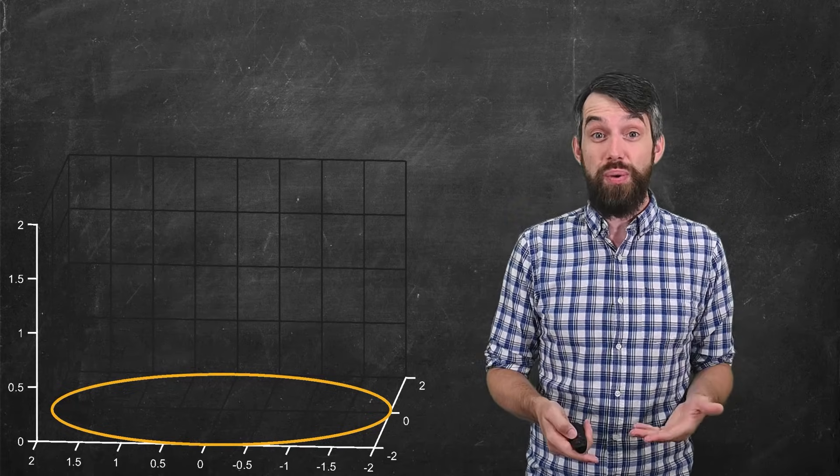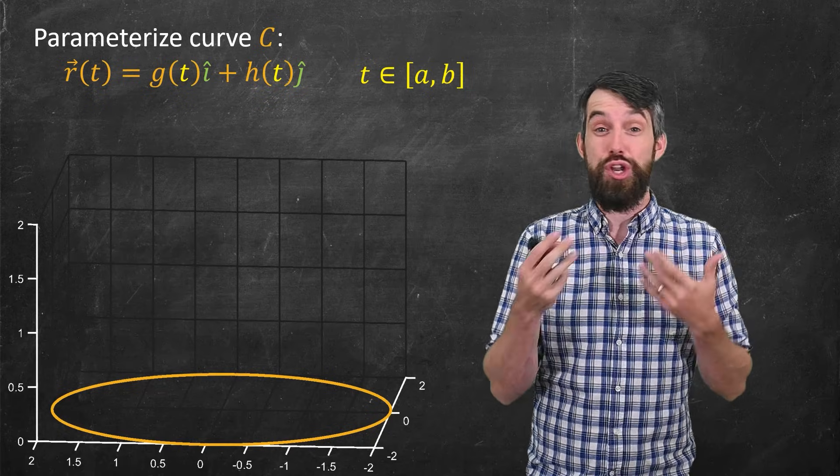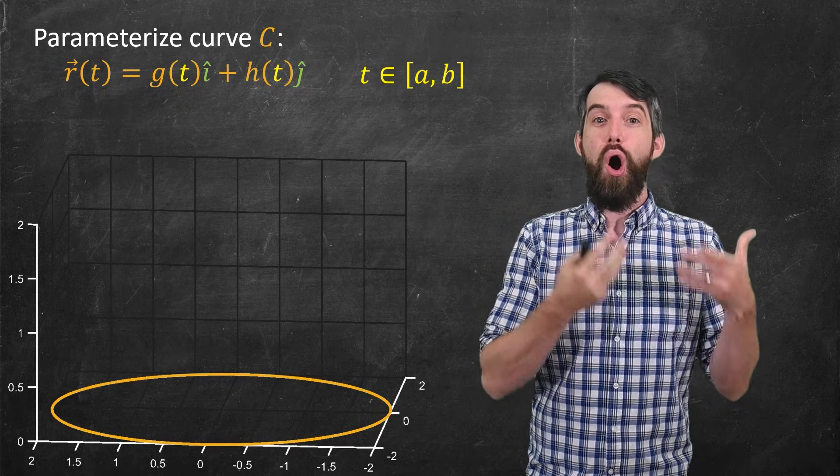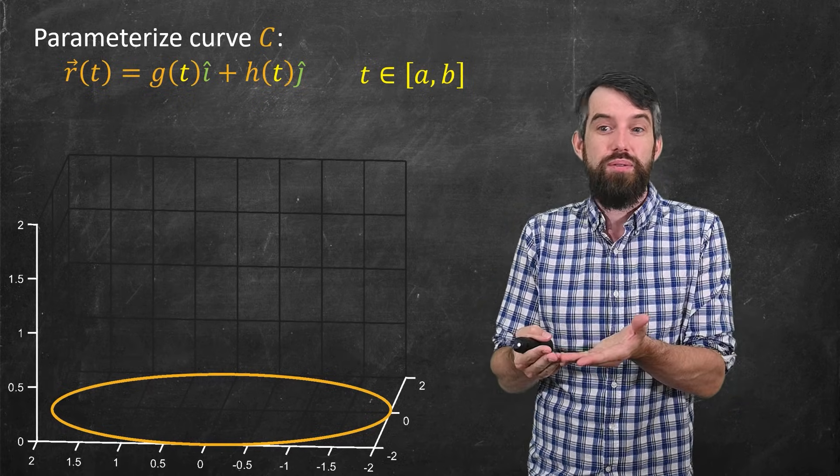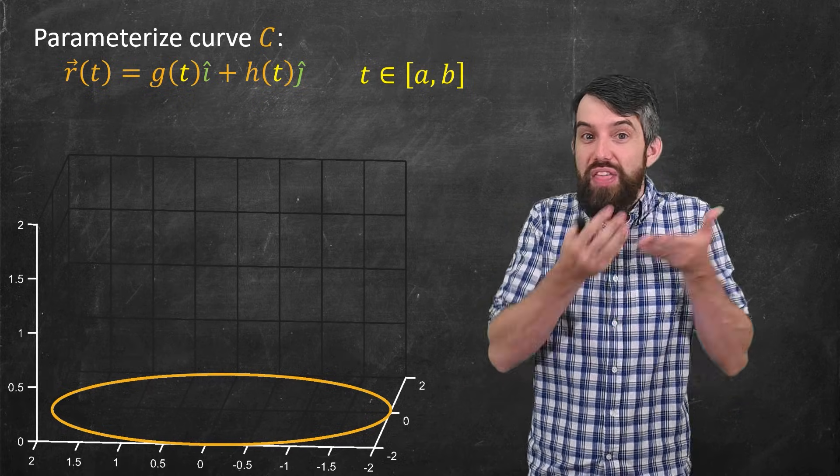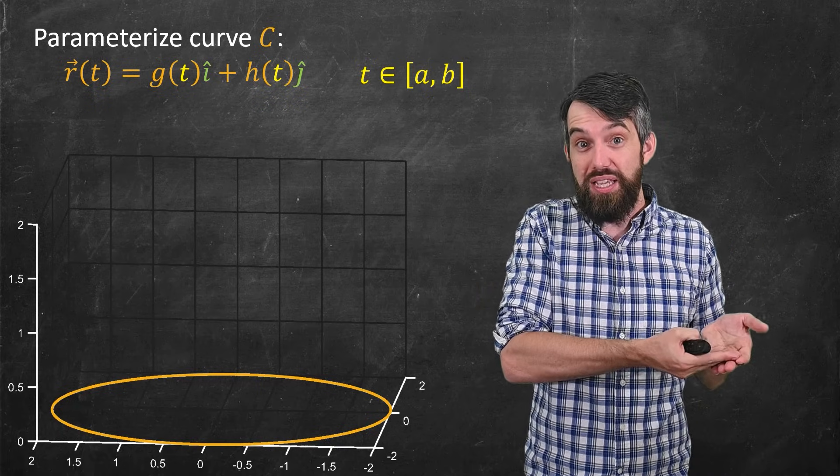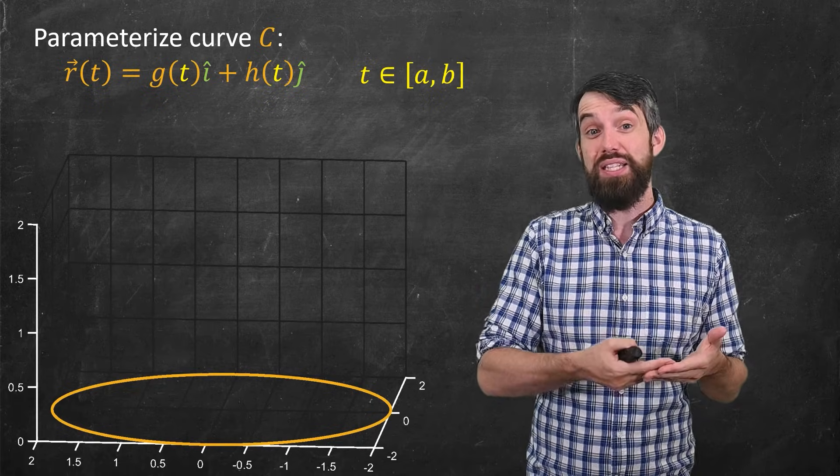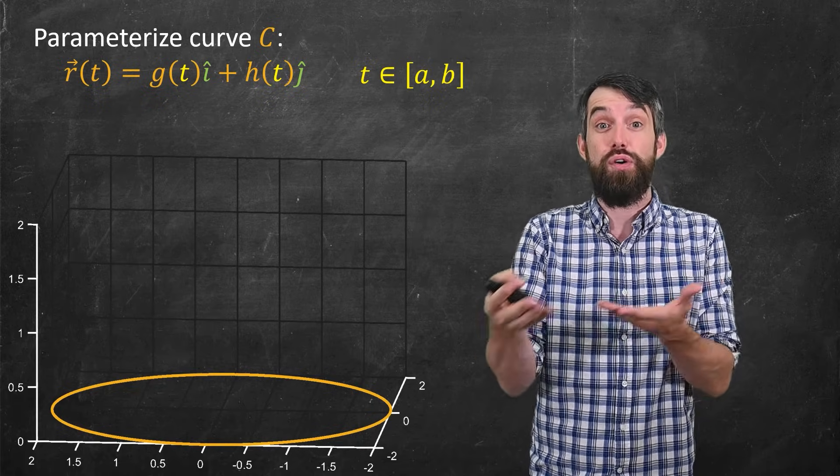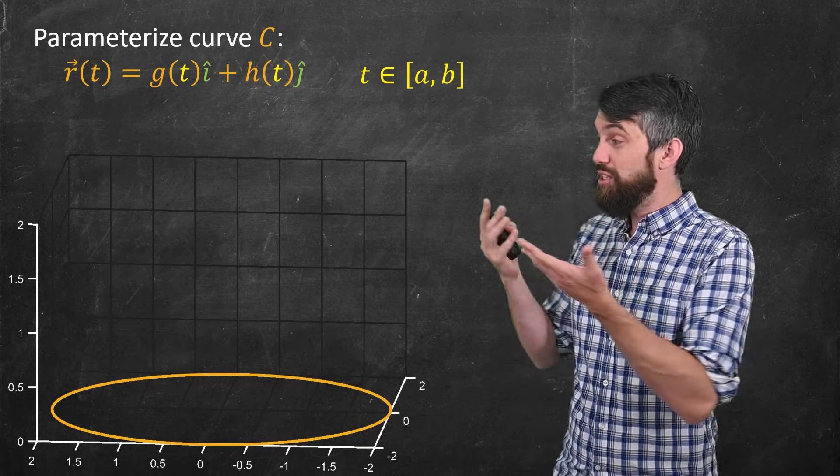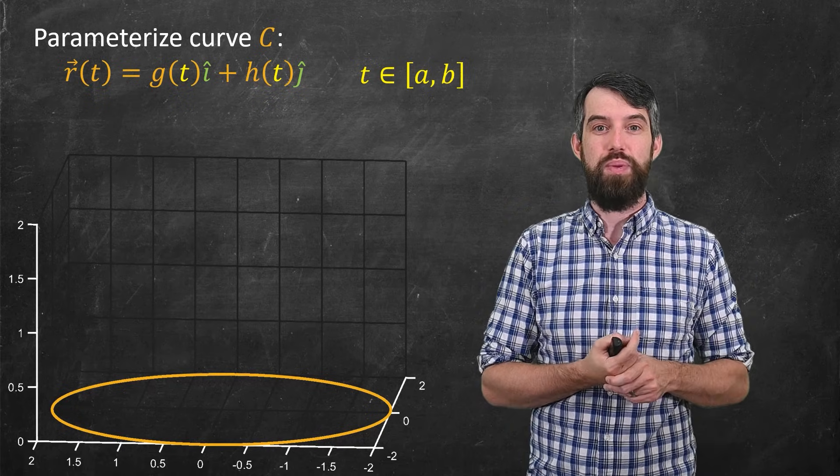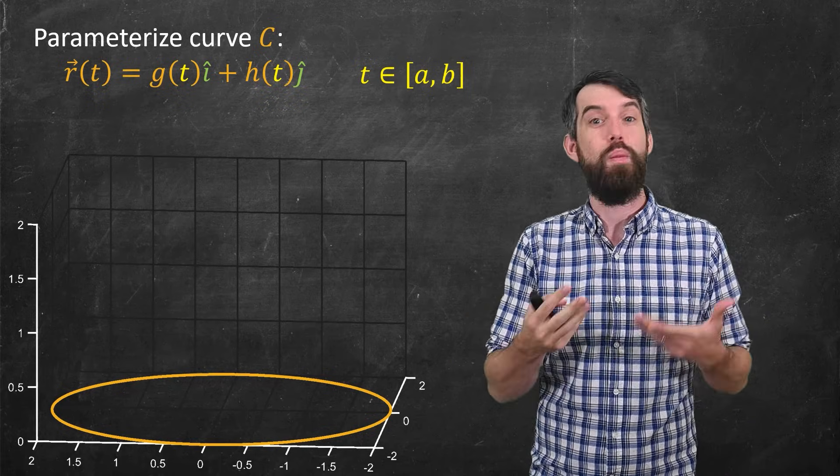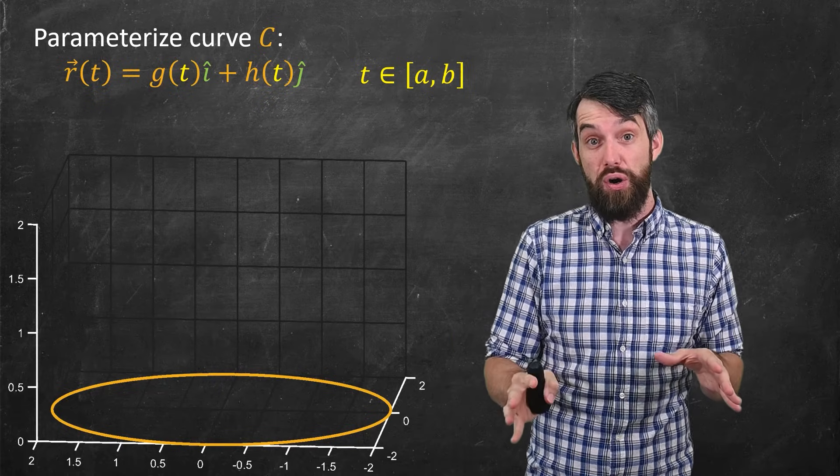I can talk about this more generally by parametrizing a generic curve, which we call c. The way I parametrize curves is I write r(t) is going to be an x component, g(t), in the i-hat direction, and then a y component, h(t), in the j-hat direction. If I am parametrizing it like this, I need to specify some domain of my parameter t, so I say t is in some interval a up to b.